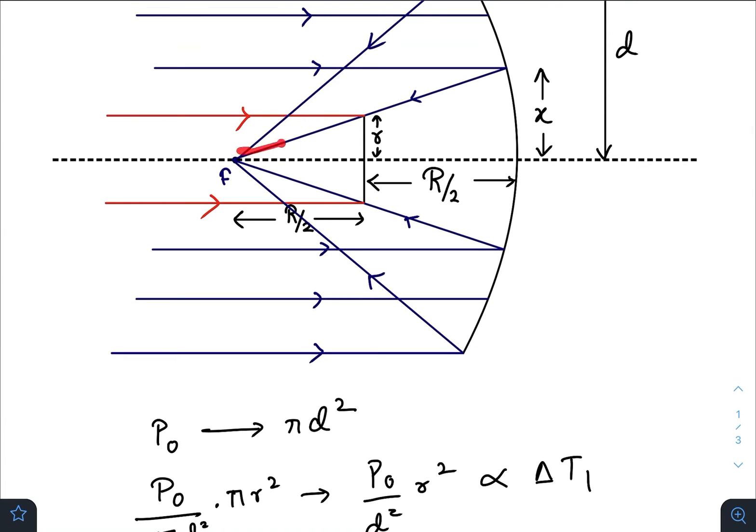So P naught divided by d square times, how can we find x? We can find x using the concept of similar triangles. As you can see, x divided by... sorry, here I have done a simple mistake. It should be r by 4 because this one is the focal length, and that should be half of the radius of curvature.